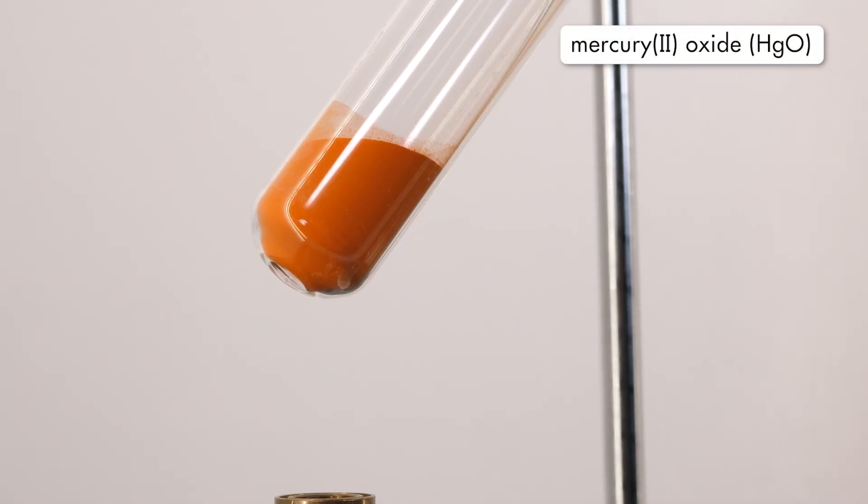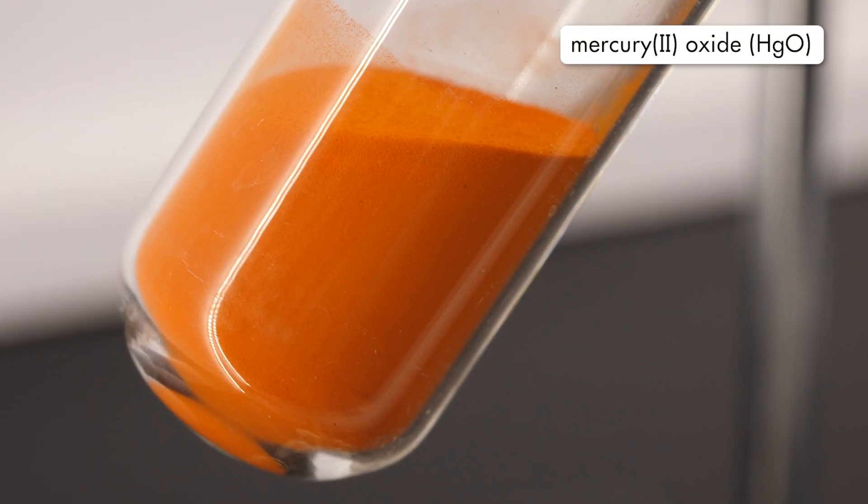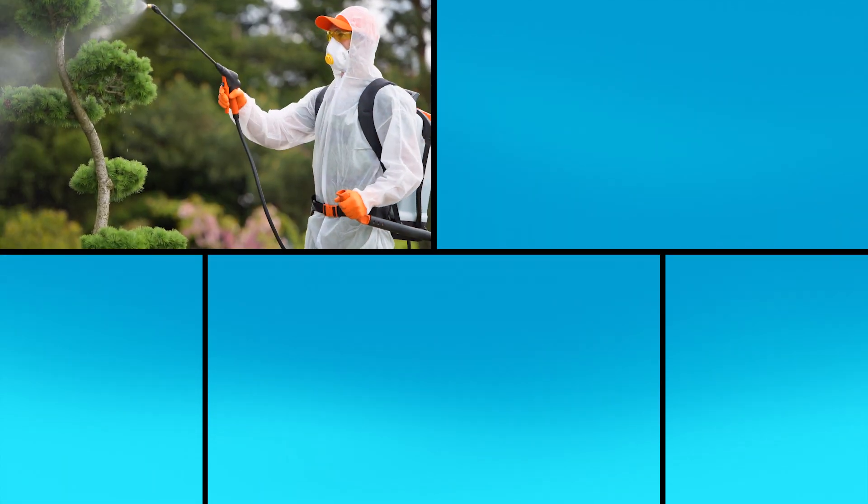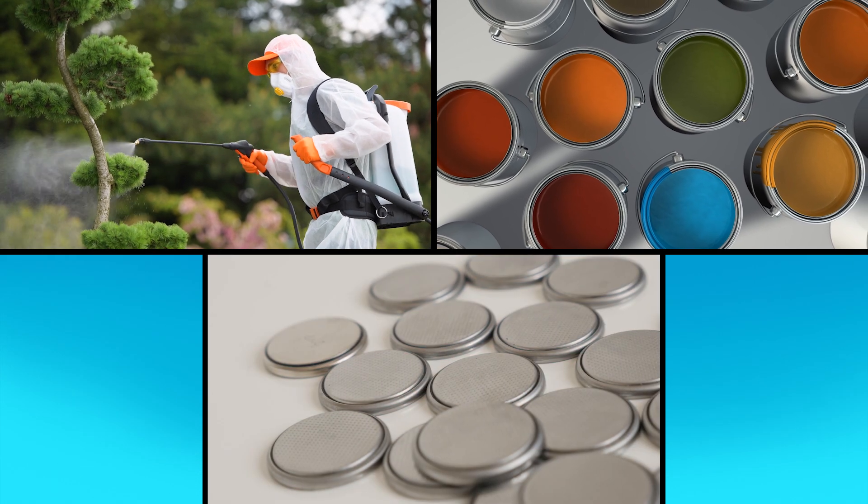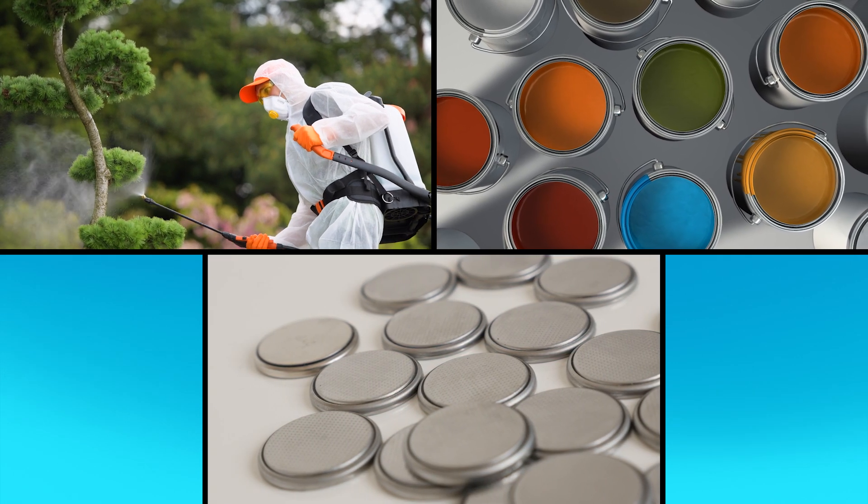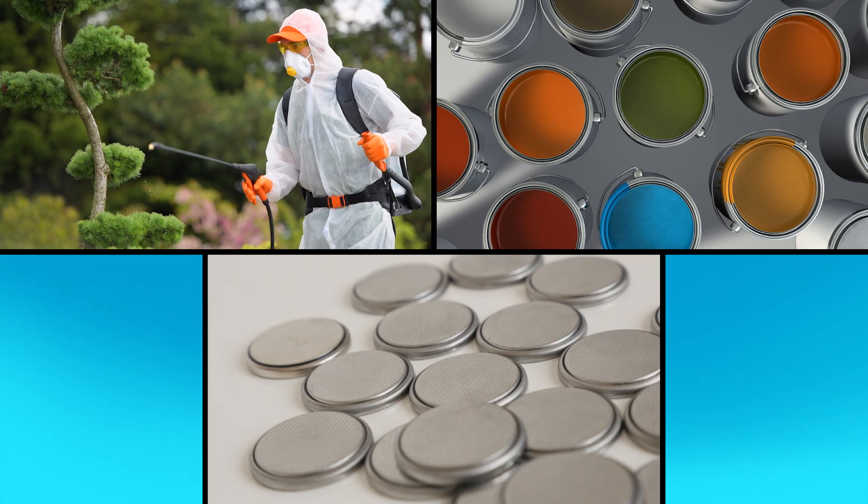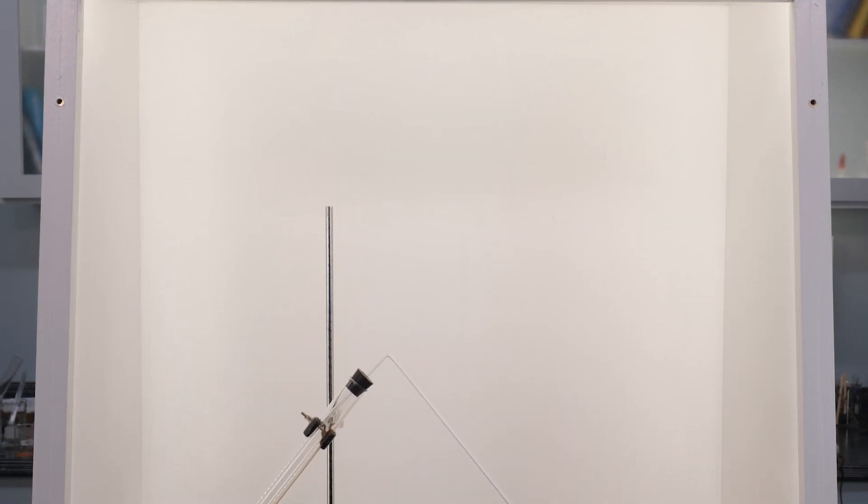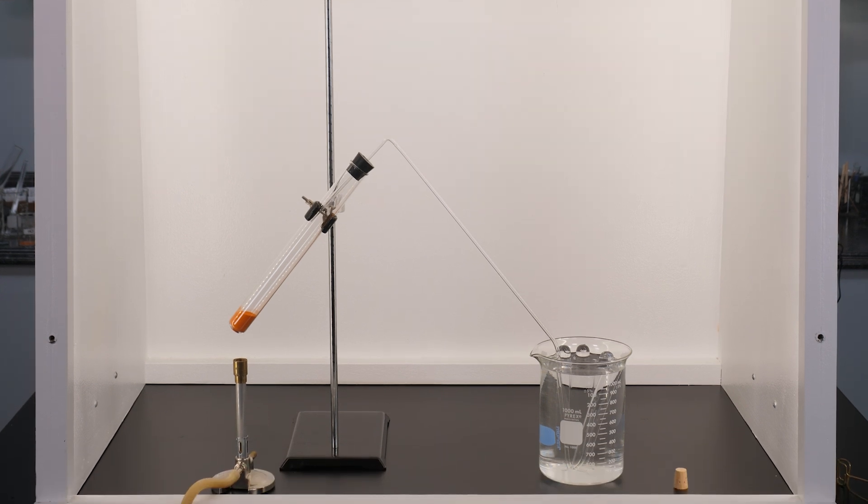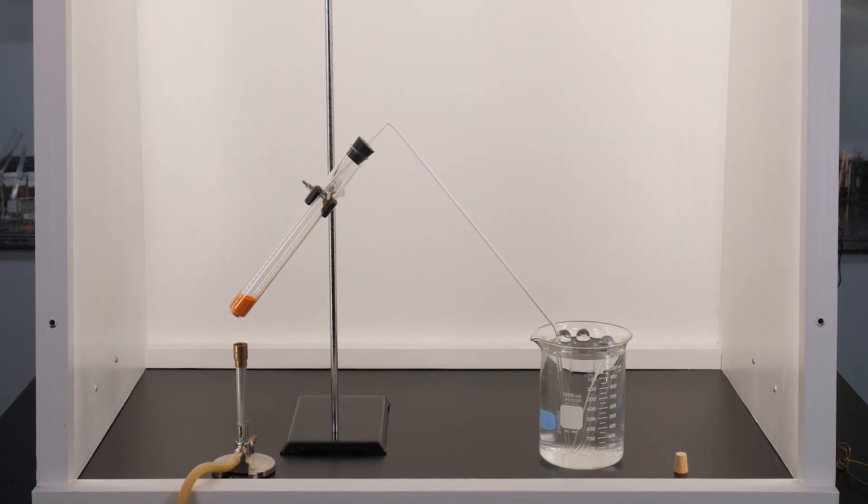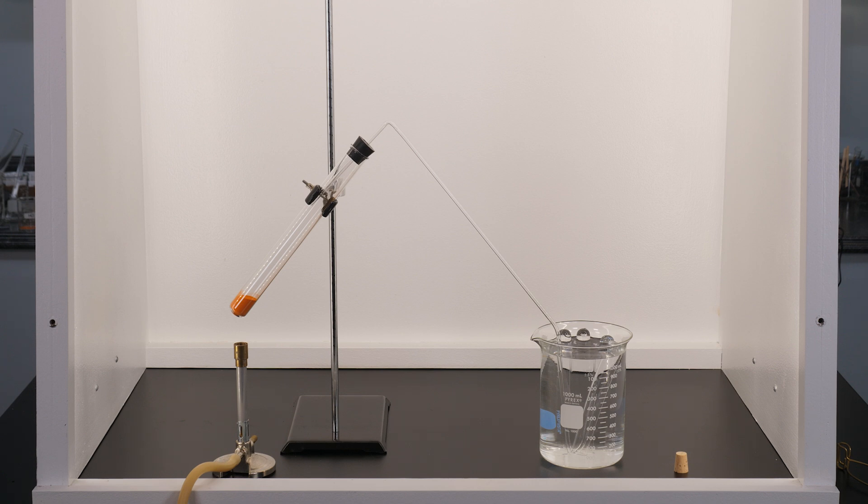Mercury(II) oxide is a reddish-orange compound, used as a pesticide, a paint pigment, and in the manufacturing of mercury compounds used in batteries. We will use this setup to decompose mercury(II) oxide into its component elements, mercury and oxygen.